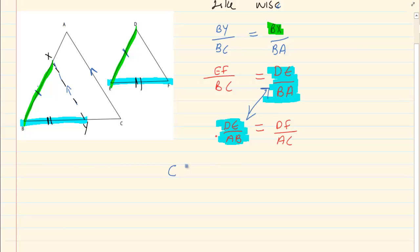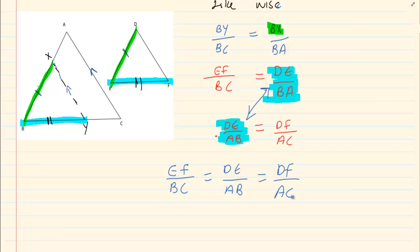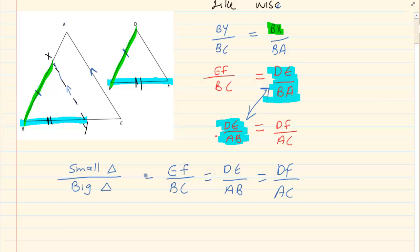Therefore I can now make a final conclusion. Looking at the information given — they wanted us to prove that the corresponding sides are in proportion. And you can now see that the corresponding sides are in proportion: on the top is the small triangle and at the bottom is the big triangle, and the sides are linked to the angles that they are equal to. The sides are in proportion.